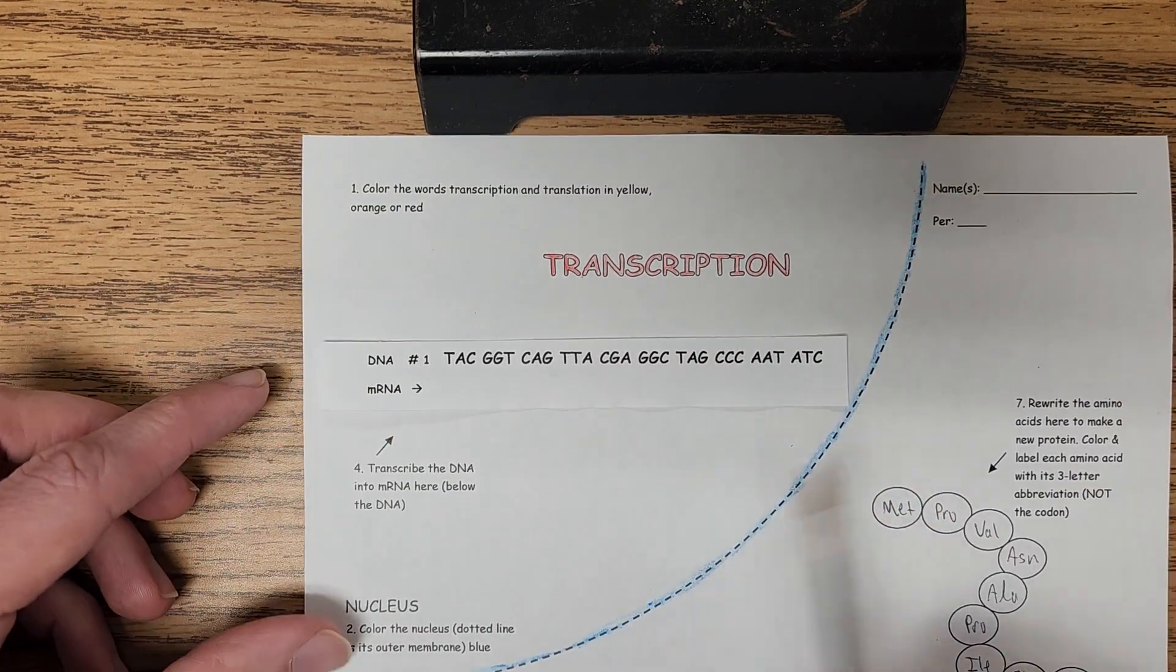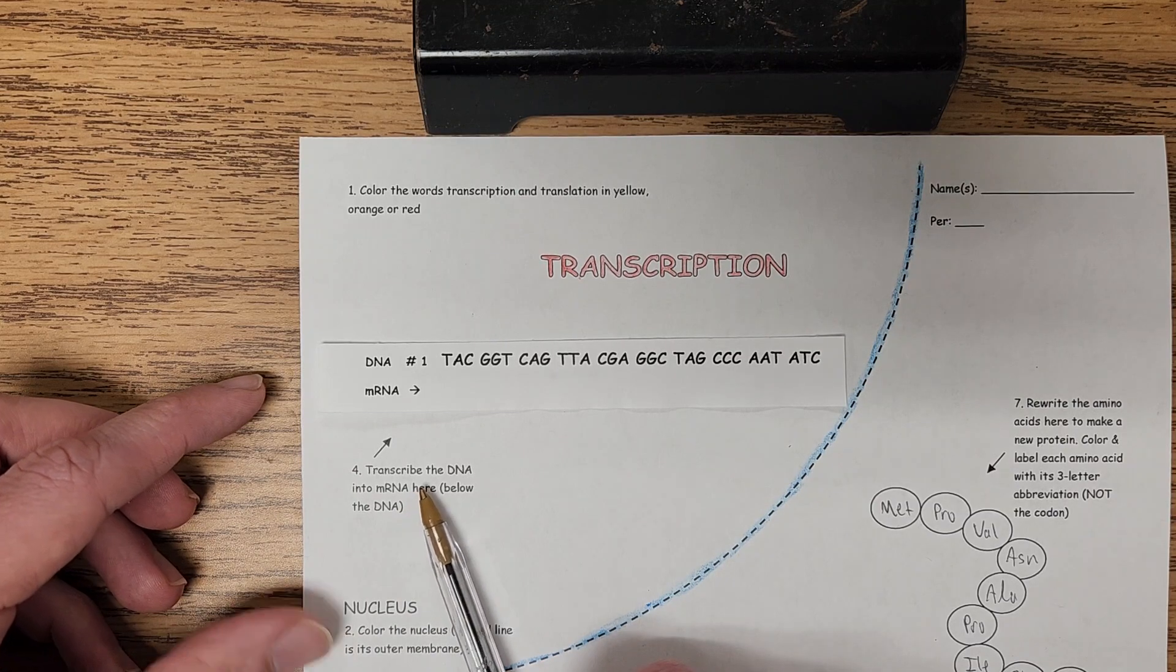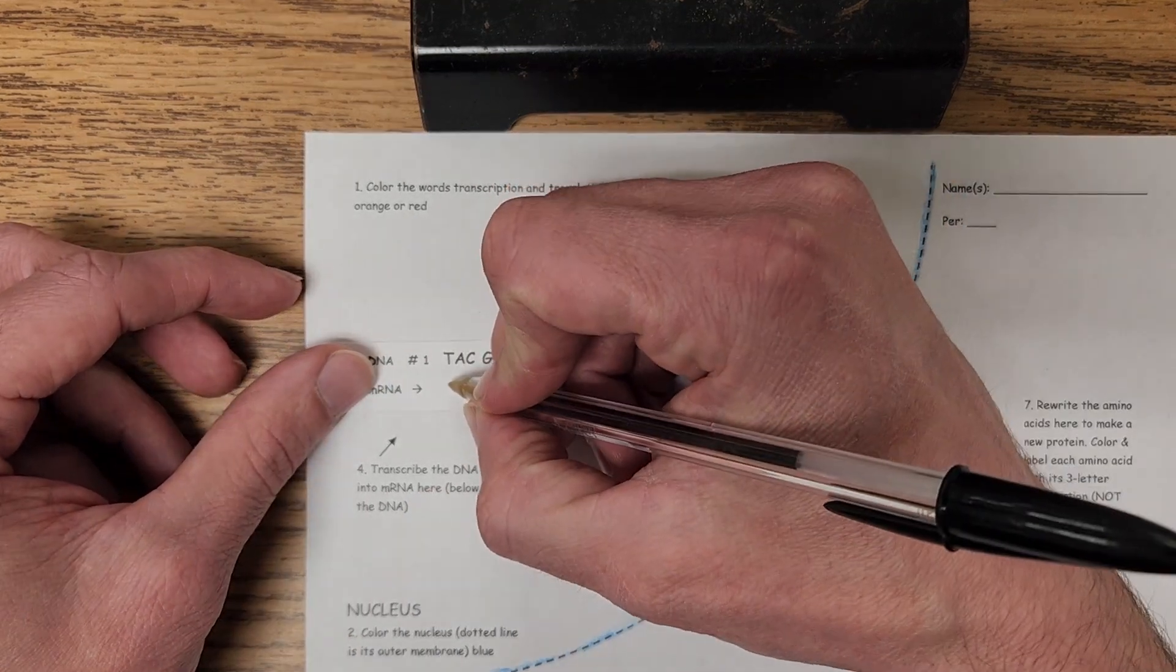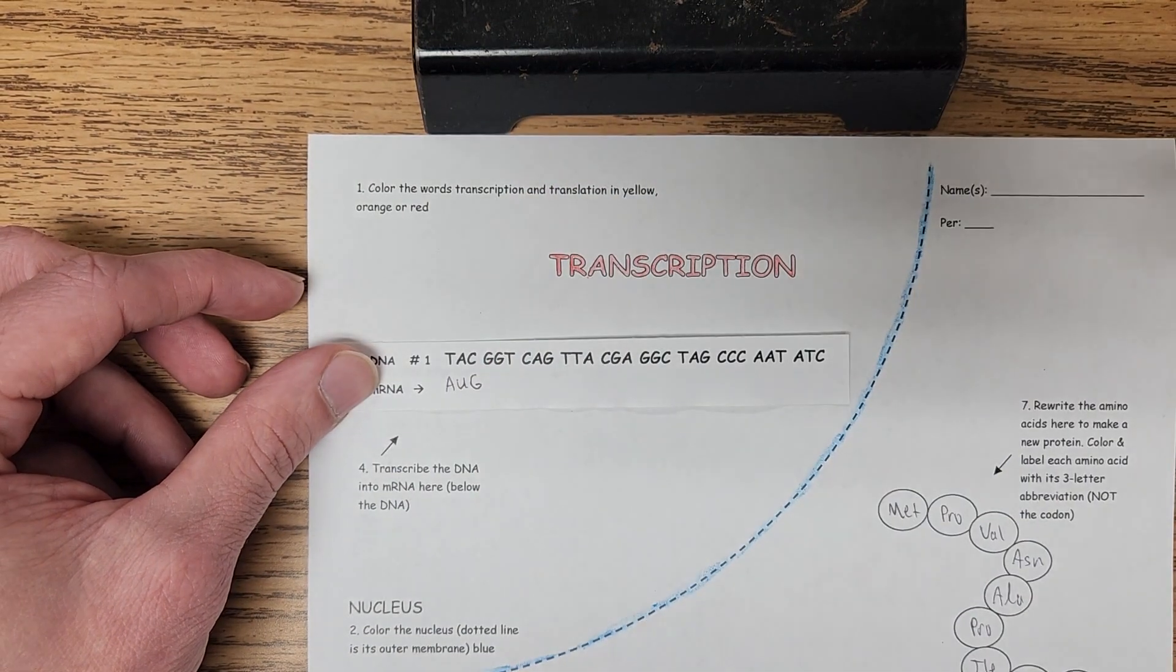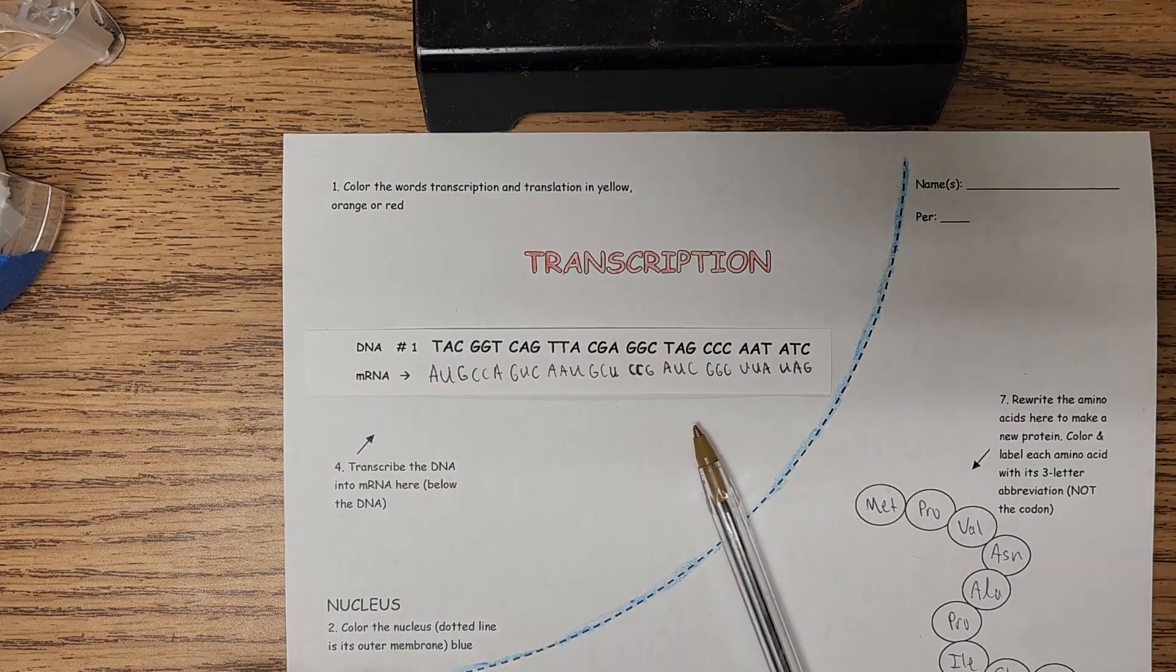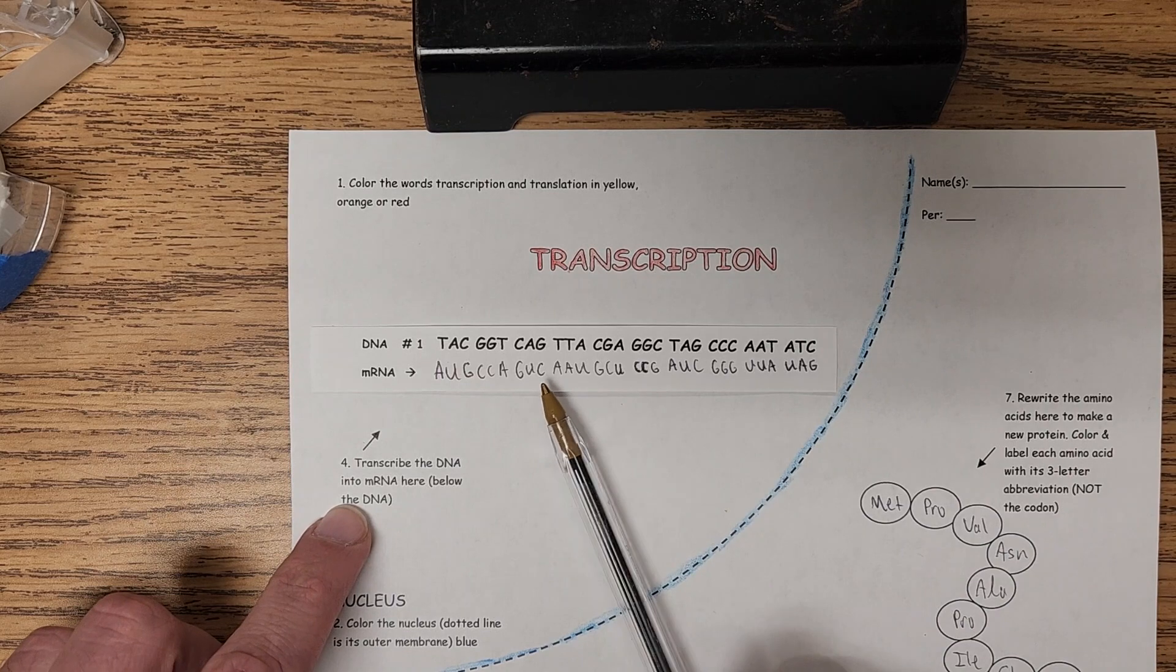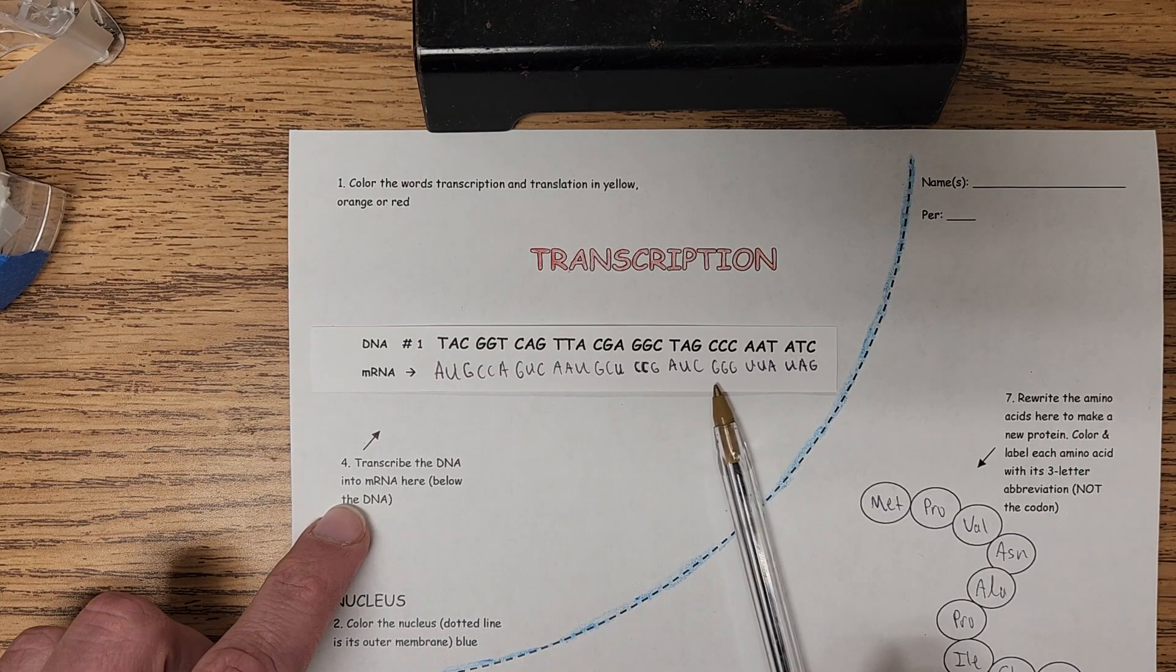And then once you've done that, you've got to follow direction number four and transcribe the DNA letters into mRNA, such as T pairs with A, A pairs with U, and C pairs with G, and so on until you're done. More or less like that. Once you've followed direction number four, transcribe the DNA into mRNA.